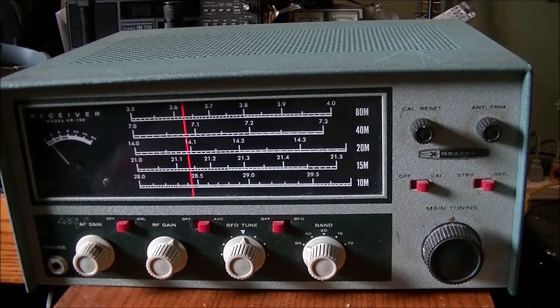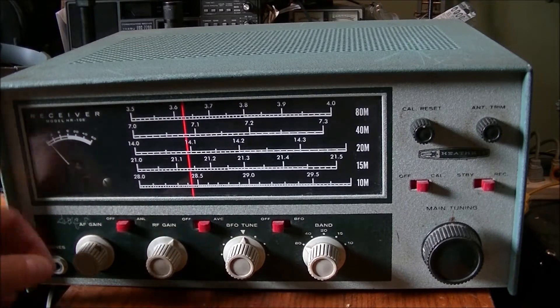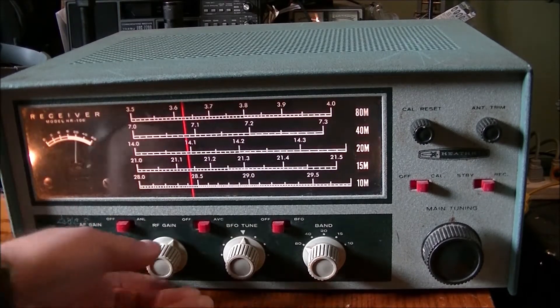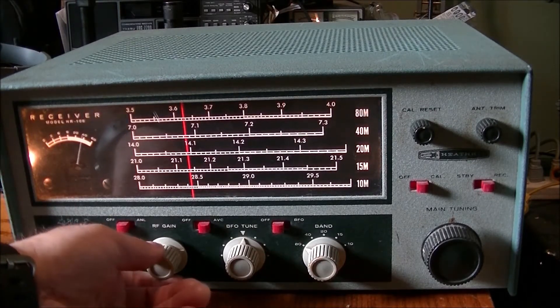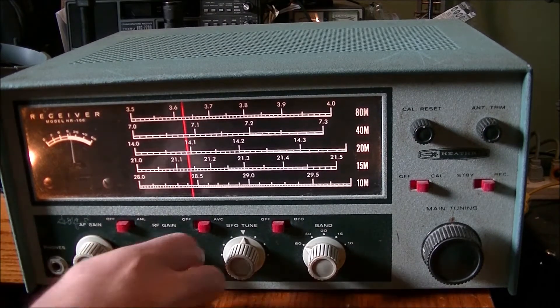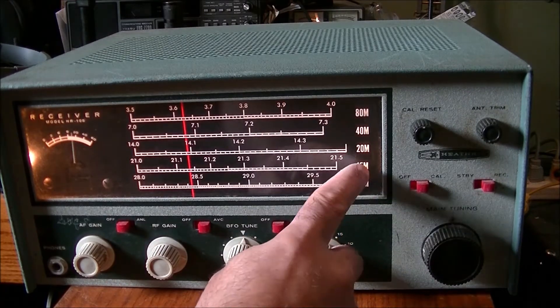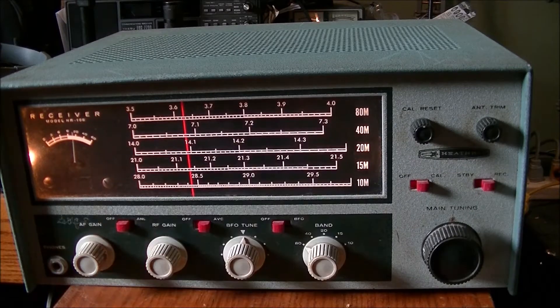It's a tube receiver as you can see, and obviously it has some sort of RF gain control here. It goes from 0 to 80, not exactly sure what that's all about, but obviously it must be for trimming. And of course it does 10 meters, 15, 20, 40, and 80 meter.